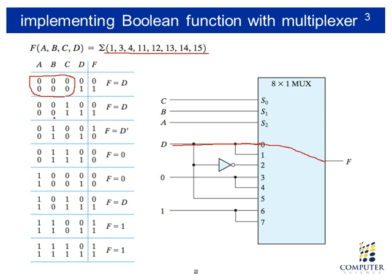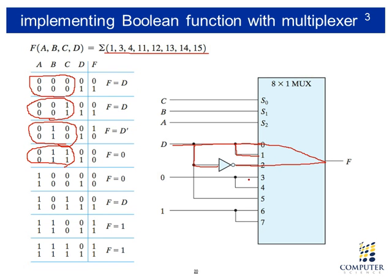When selections are zero-zero-one — the next two rows — we expect function F to equal D, so D is connected to input one again. The next two rows have A, B, C as zero-one-zero, so input two is connected to the output. The expected function value is one-zero, which is the complement of D, so we connect an inverter and connect its output to input two. For the next two rows with A, B, C as zero-one-one, input three is connected to the output and the expected function is zero-zero, so we connect zero directly to input three. We also connect zero to input four.